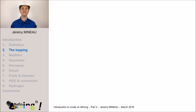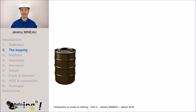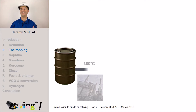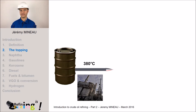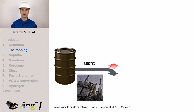The first stage consists in heating up crude oil up to a temperature of 380 degrees and at atmospheric pressure. At this temperature, the crude oil is partially vaporized. This vapor and liquid mixture then enters a column which we call the topping.